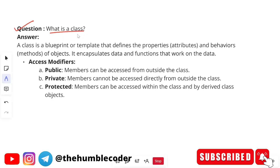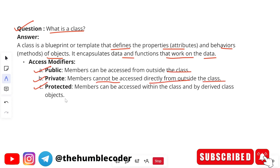Next question: what is a class? A class is a blueprint or template that defines the properties and behaviors — behaviors being methods — of objects. It encapsulates data and functions that work on that data. Access modifiers are public, private, and protected. Public means members can be accessed from outside the class, private means members cannot be accessed directly from outside, and protected means members can be accessed within the class and derived objects.